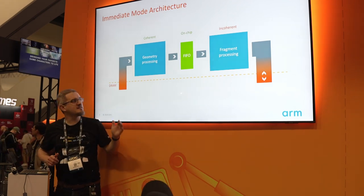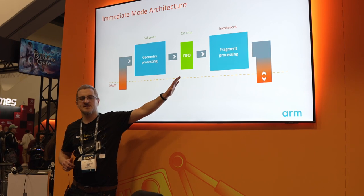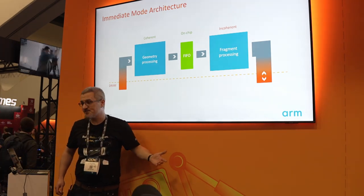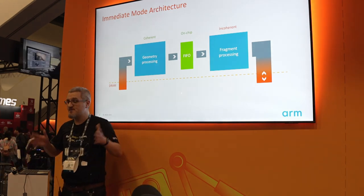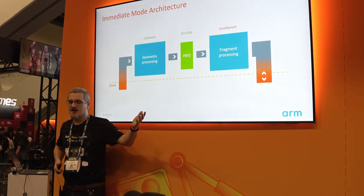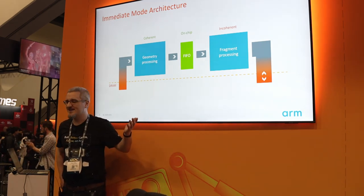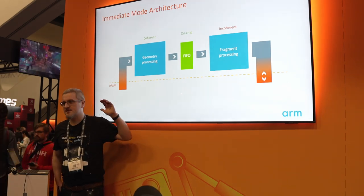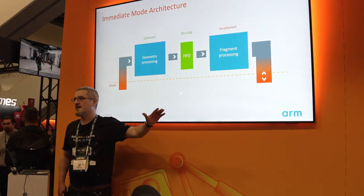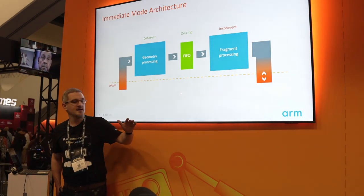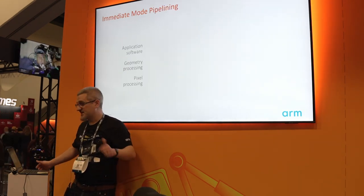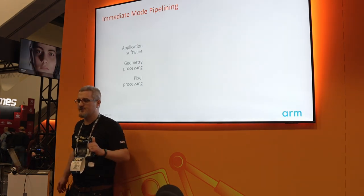The challenge with this is that the working set processes triangles in the order the application sends them, and those triangles could be anywhere on screen. The data size for your frame buffer working set is the whole screen, and when we first started designing mobile GPUs 20 years ago, the memory needed was just far too big to keep on chip. So you're going out to main memory, and for things like blending, depth testing, and stencil testing, you get a lot of read-modify-write traffic.